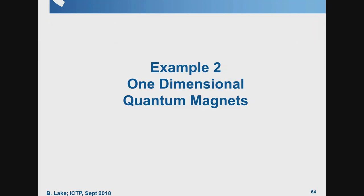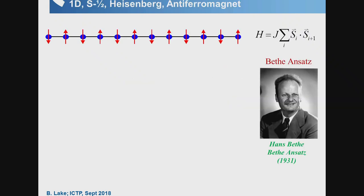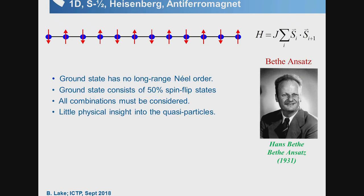The next example is one-dimensional magnets. The one-dimensional spin-½ Heisenberg antiferromagnetic chain is not frustrated — it has simple antiferromagnetic Heisenberg interactions. First tackled by Hans Bethe in 1931, he realized there is no long-range order in the ground state, and actually 50% of the spins are flipped from the Néel state.